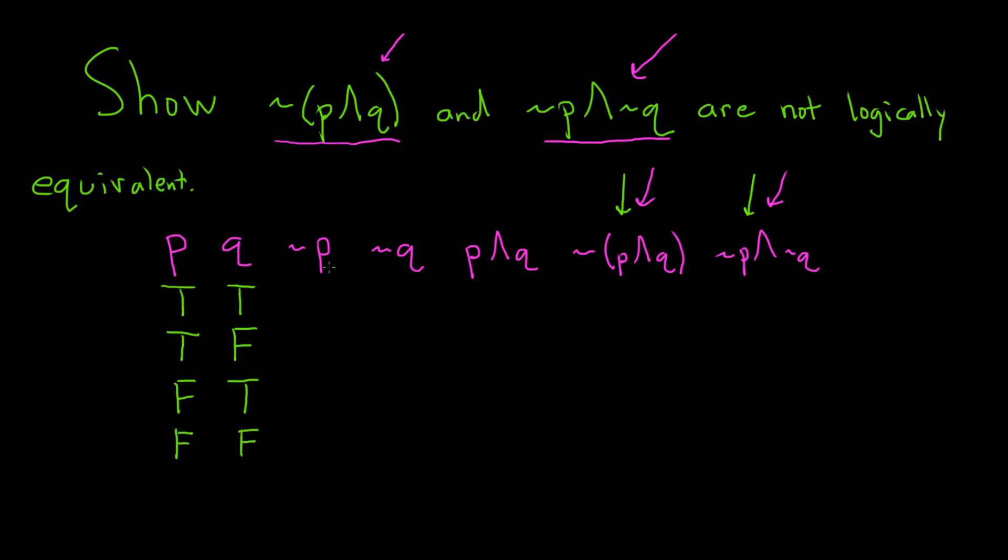Let's go ahead and work vertically this time. So I'm just going to work down on each one. So ~p - we're just going to look at p and then just negate each of these. So the opposite of true is false, the opposite of true is false. The opposite of false is true, the opposite of false is true.